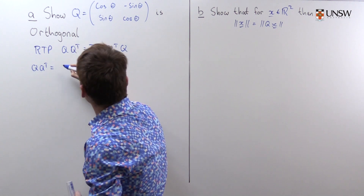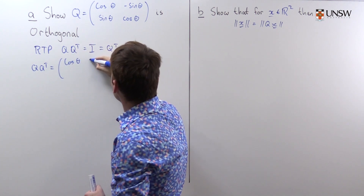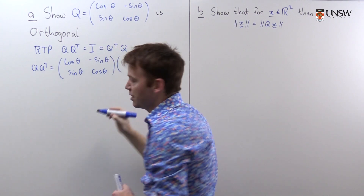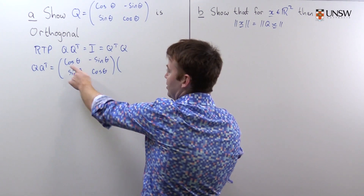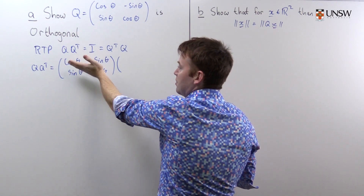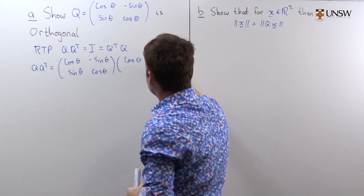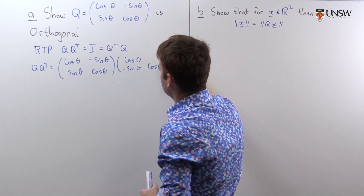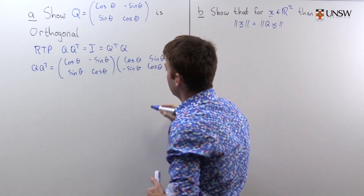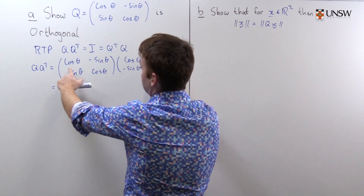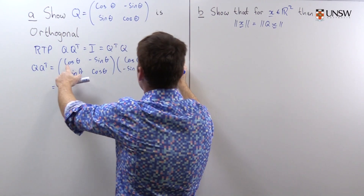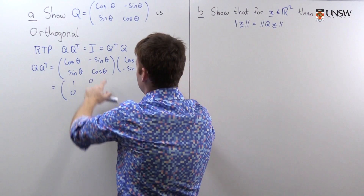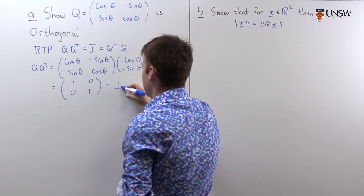Q Q transpose is equal to: the matrix Q is cos θ, −sin θ, sin θ, cos θ — and a shout out to those who haven't seen transpose before. The transpose is not difficult to find; it's just the same matrix Q except you reflect in the main diagonal. So cos θ stays on the diagonal, −sin θ moves down, and sin θ moves up. When we multiply this out we get cos²θ + sin²θ = 1, cos θ sin θ − cos θ sin θ = 0, and sin²θ + cos²θ = 1 — which is exactly the identity. Excellent.